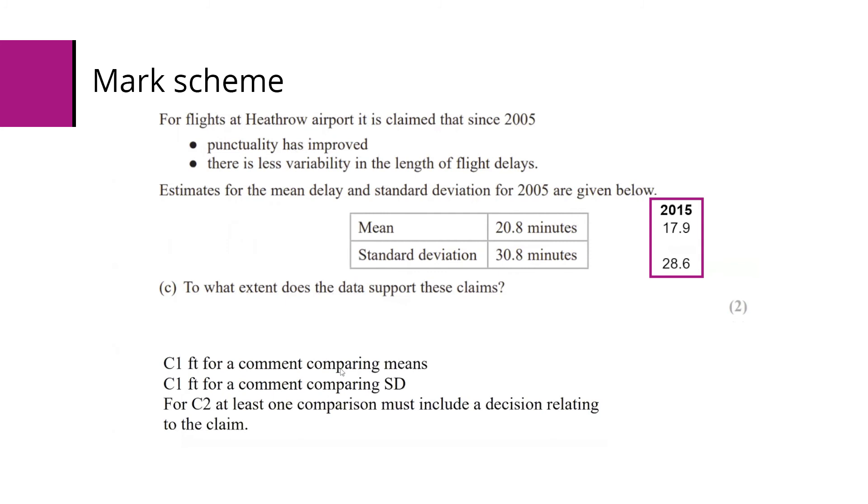Mark scheme: one mark for a comment comparing the means and one for a comment comparing standard deviation, but you can only get two marks if at least somewhere you have commented on whether it supports the claim or not.